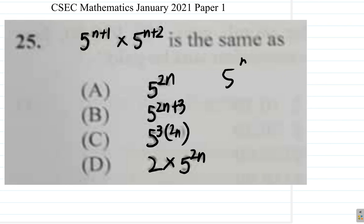5 to the n plus 1. 5 is the base. n plus 1 is the index here. Multiply by 5 to the n plus 2 is the index here. Alright, this is the same as 5 to the n plus 1 plus n plus 2.